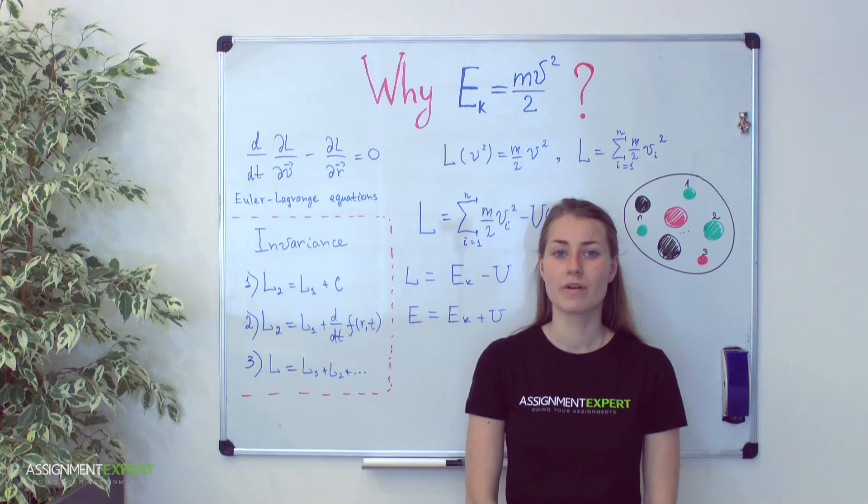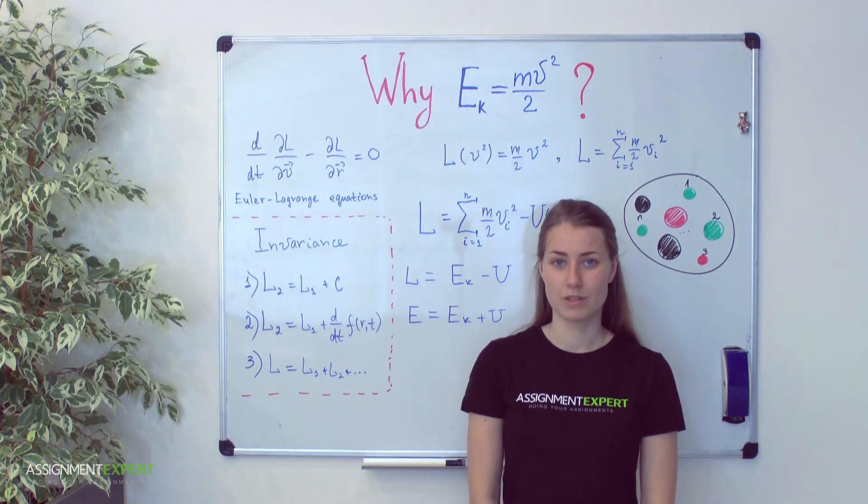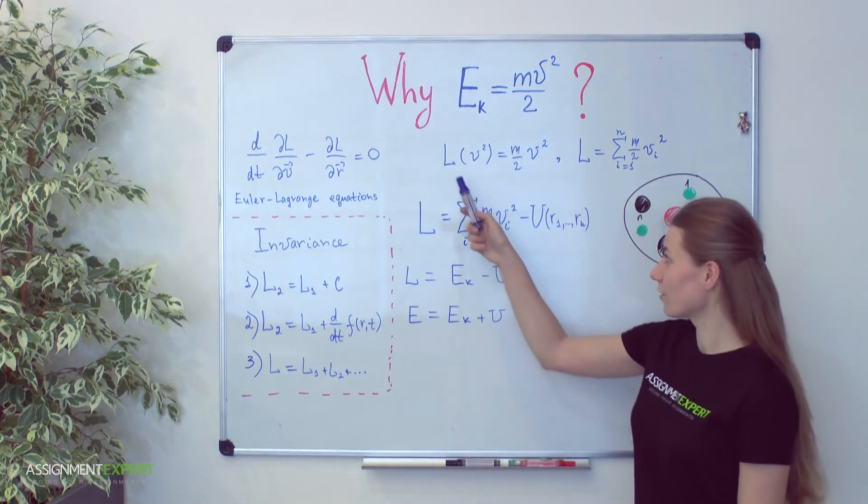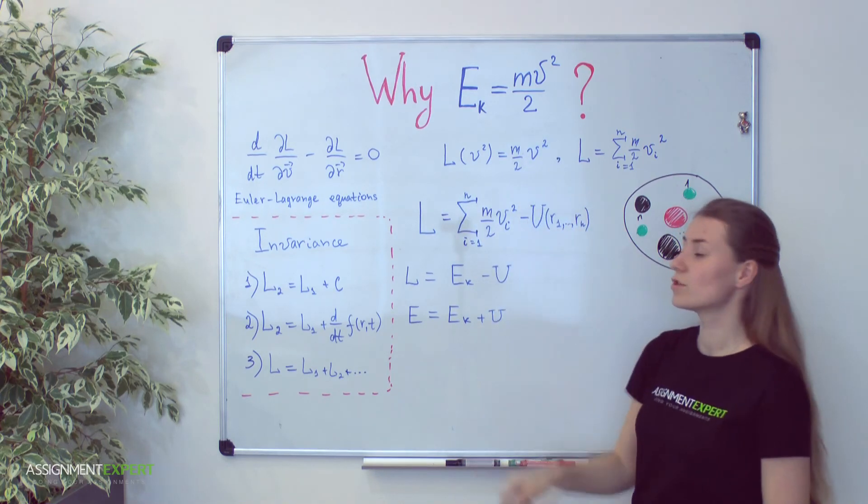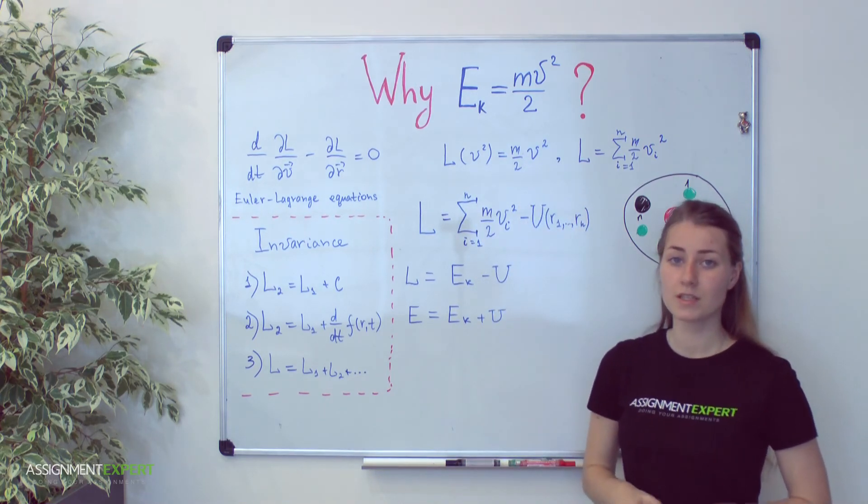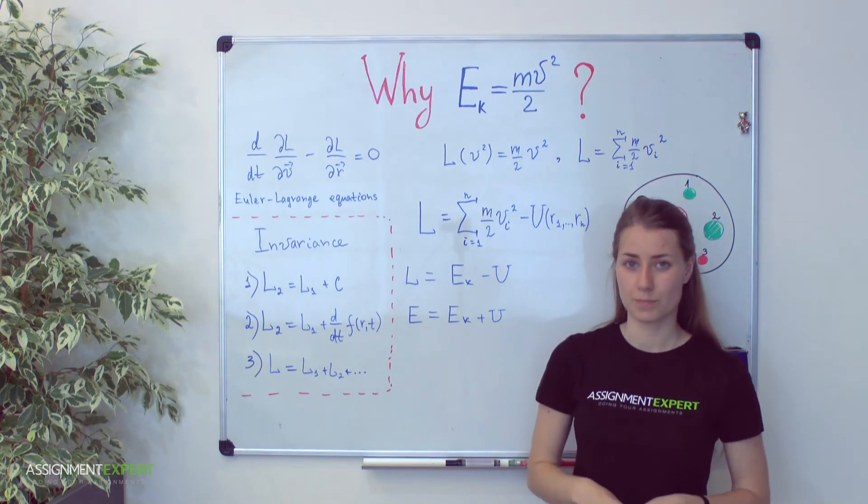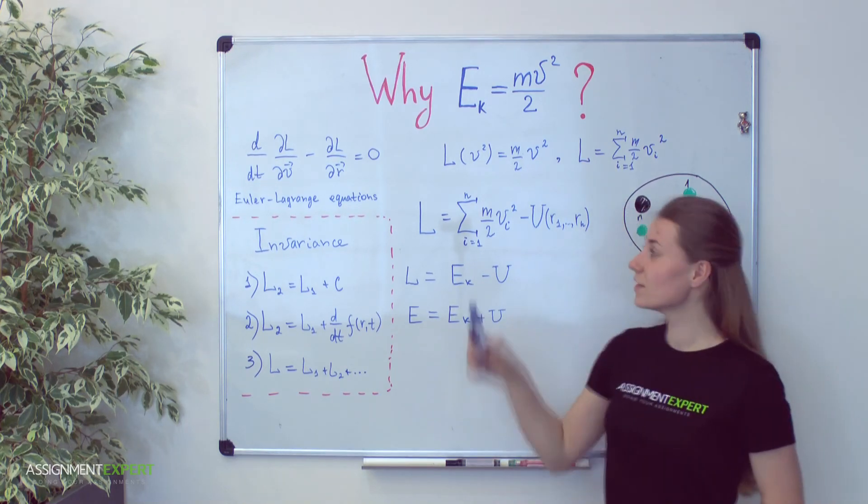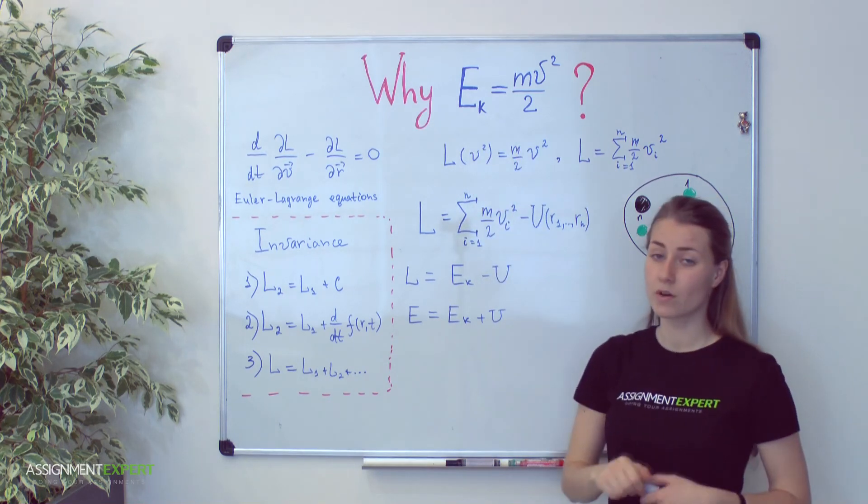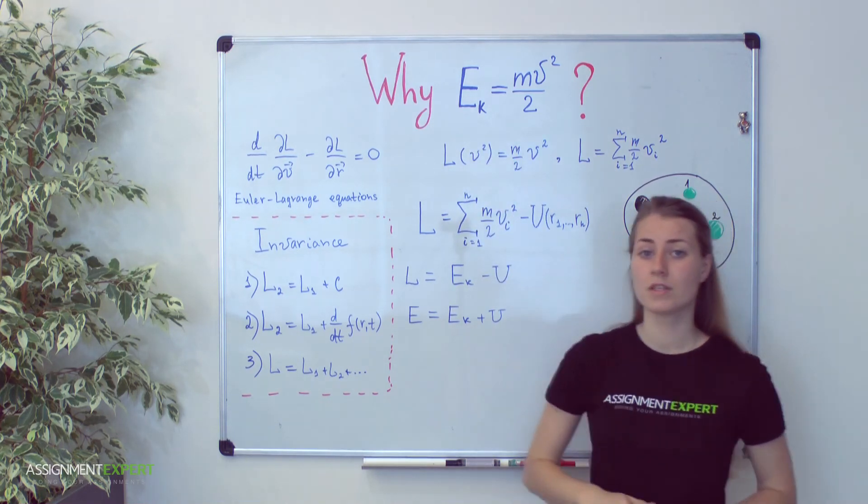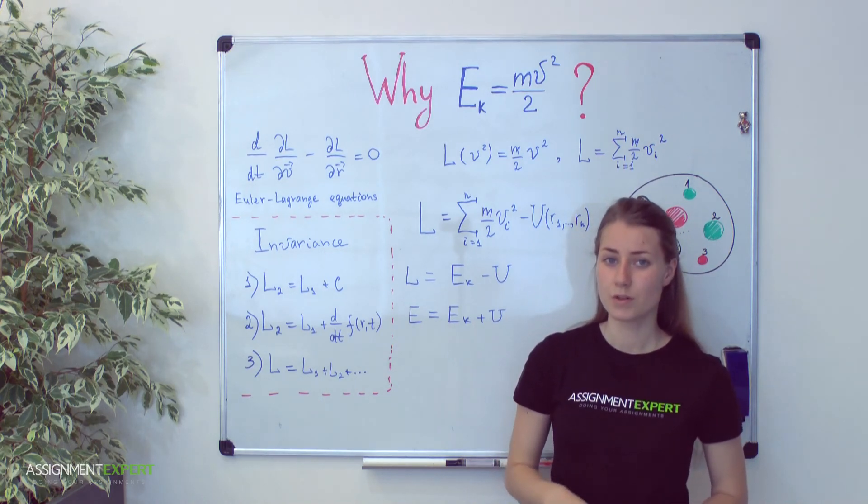Now, guys, I want to summarize all the main points being covered. First, Lagrange function can be no higher than the second order in velocity because of requirement of homogeneity and isotropy of our world. Second, constant mass divided by 2 appears in Lagrange function as well as kinetic energy as an arbitrary constant and can be fixed via the second Newton's law.